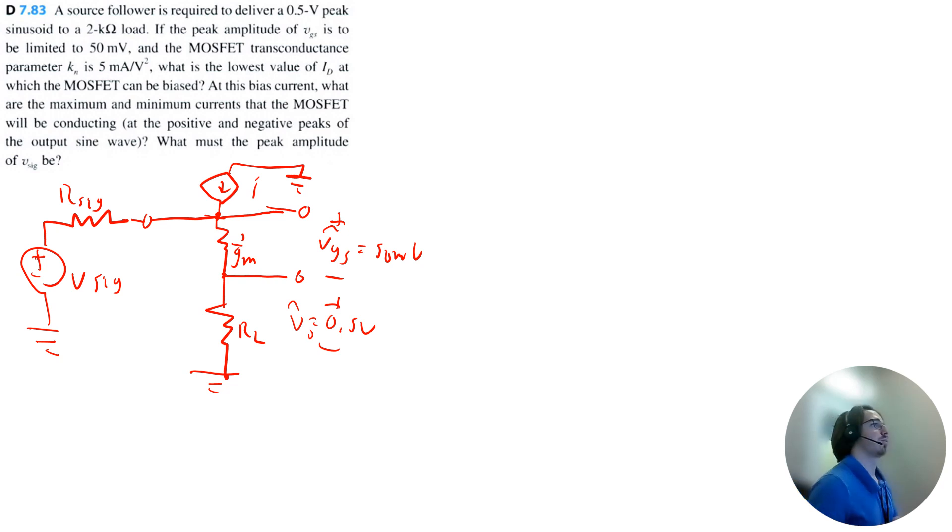Okay, so we can use the following equation to solve for drain current. It's going to be gm is equal to the positive square root of 2 times kn times id. So we can see, we need to figure out what gm is.